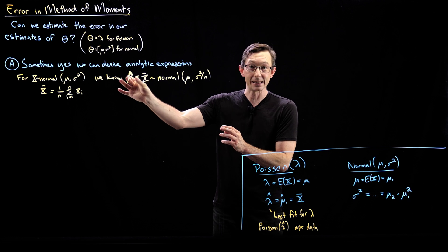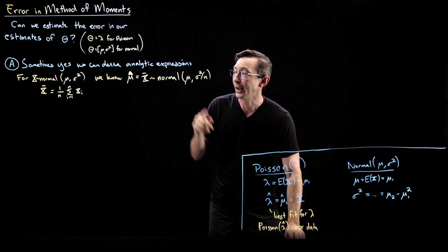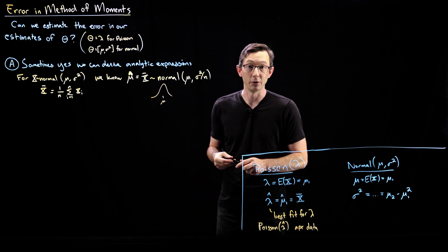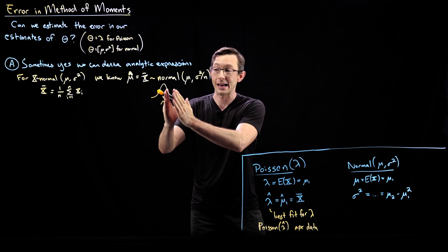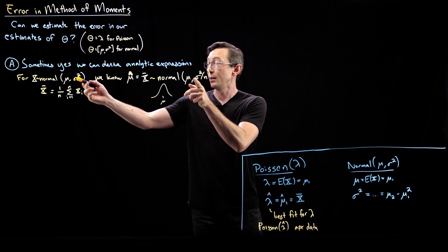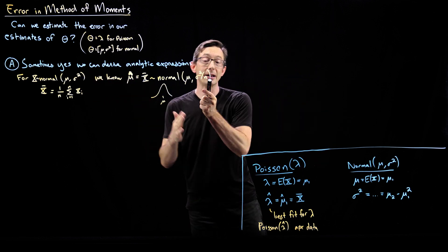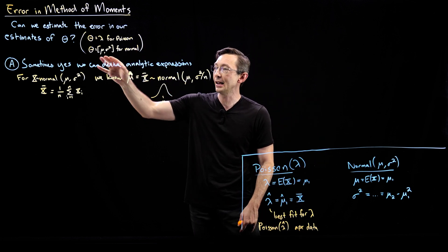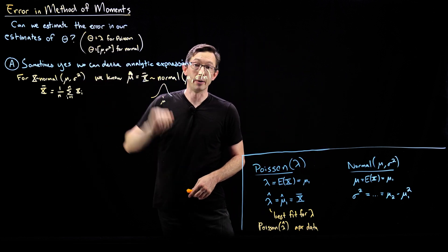So this gives us an estimate of the error in our estimate for mu hat. My best guess for mu is the sample mean x bar, and I know x bar is normally distributed around the ideal value mu. I know the spread — how much plus or minus there is in this estimate — based on the variance and the size n of my data sample. I can make the estimate tighter by collecting more data, increasing n.